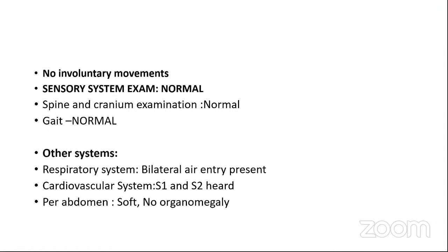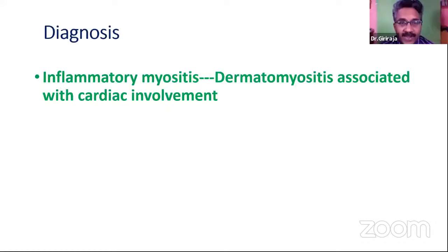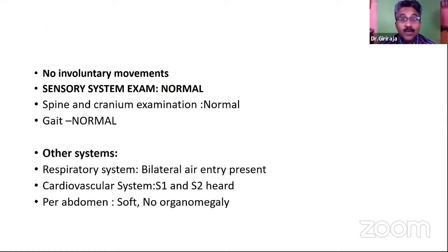Other system examination: respiratory — bilateral normal vesicular breath sounds, no added sounds. Cardiovascular — S1 S2 heard, no added sounds. Abdomen — soft, no organomegaly. Before going to diagnosis: positive examination findings are decreased power in both upper and lower limbs, predominantly proximal, with diminished but present reflexes, no sensory involvement, mute plantar responses, and no cerebellar involvement.